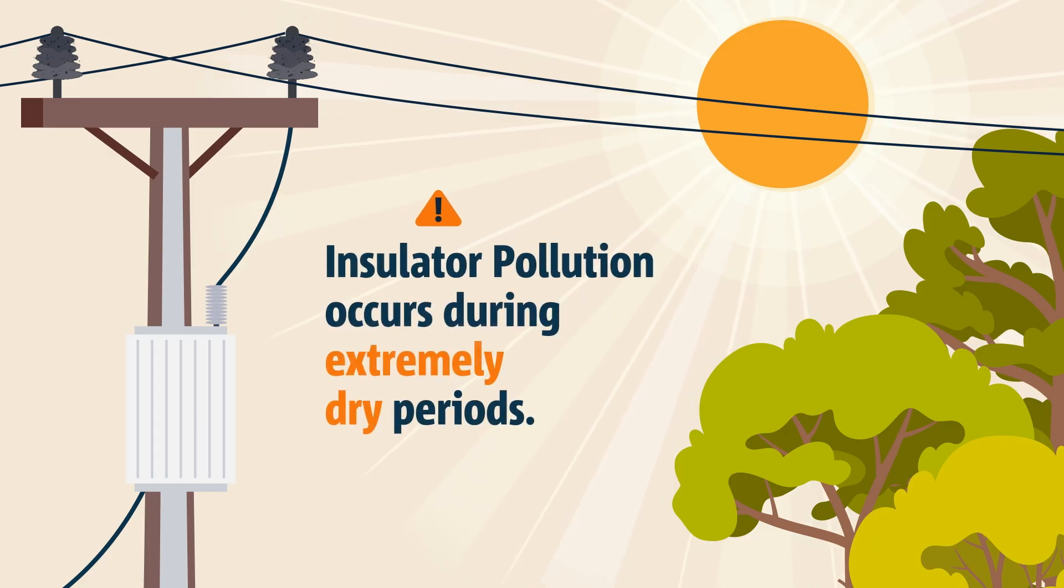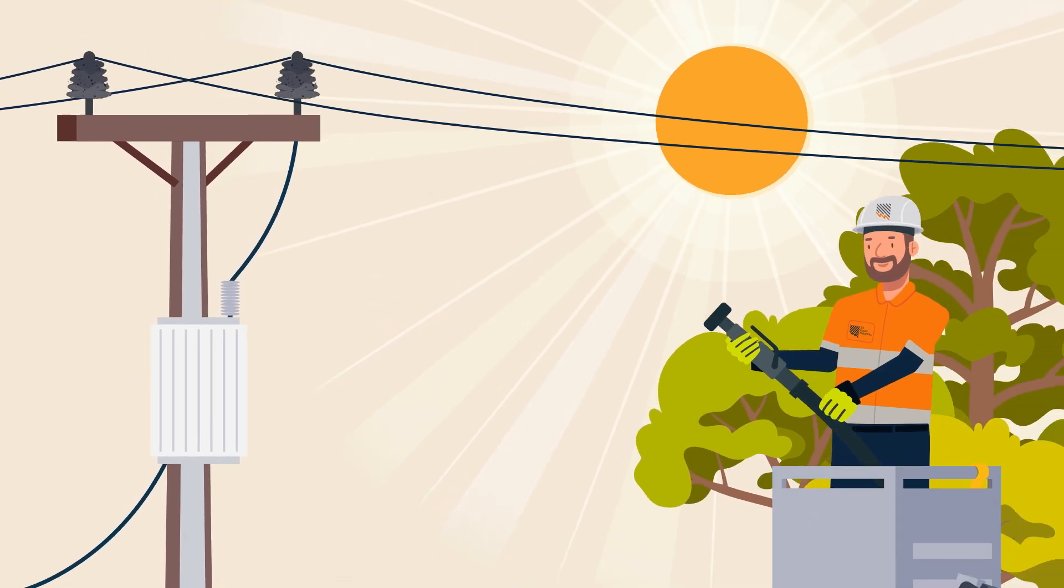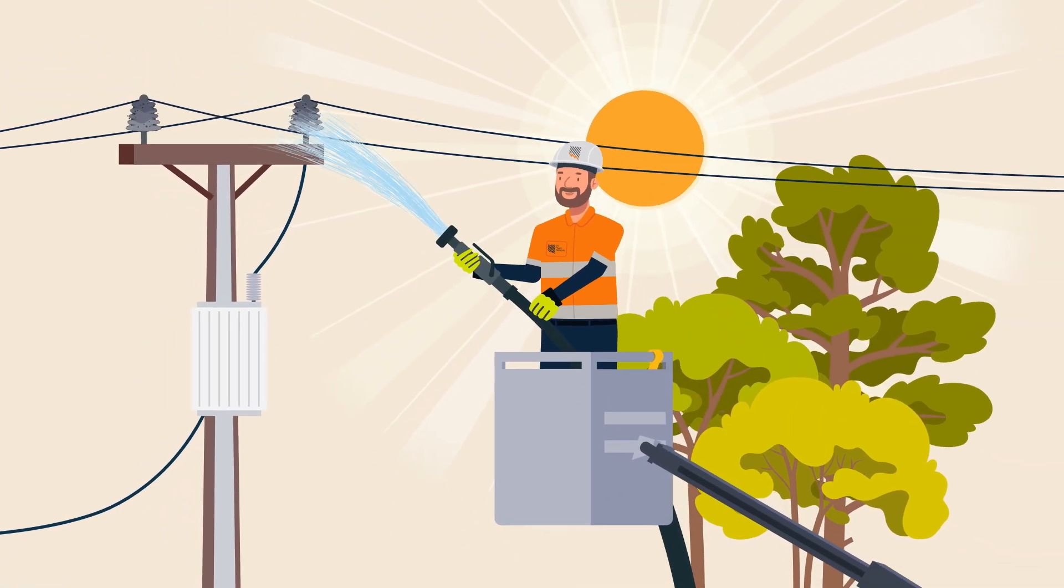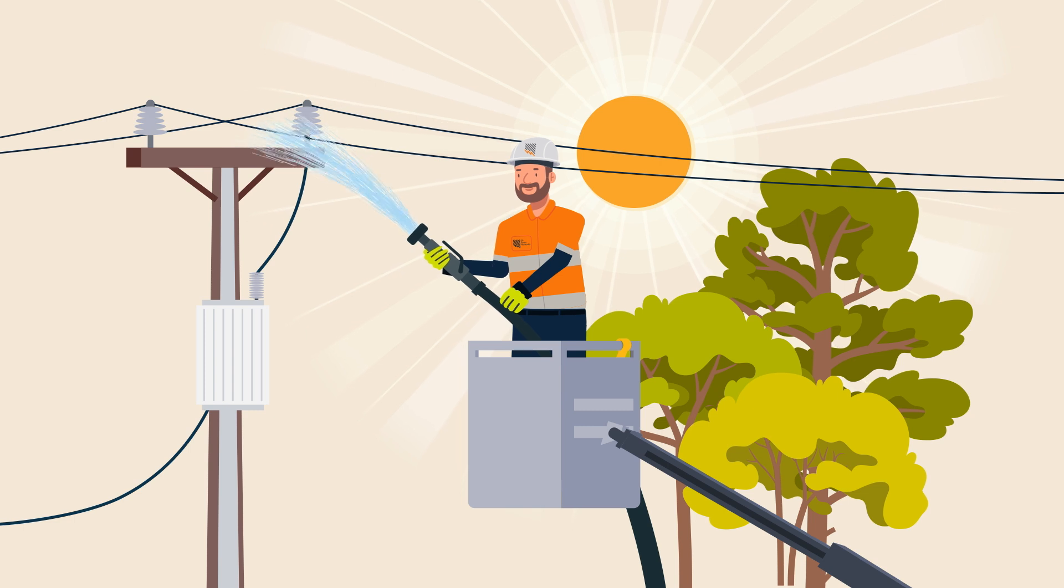Insulator pollution is a rare condition that occurs during extremely dry periods. Right now, SA Power Networks crews are out washing insulators in an effort to reduce potential power outages.